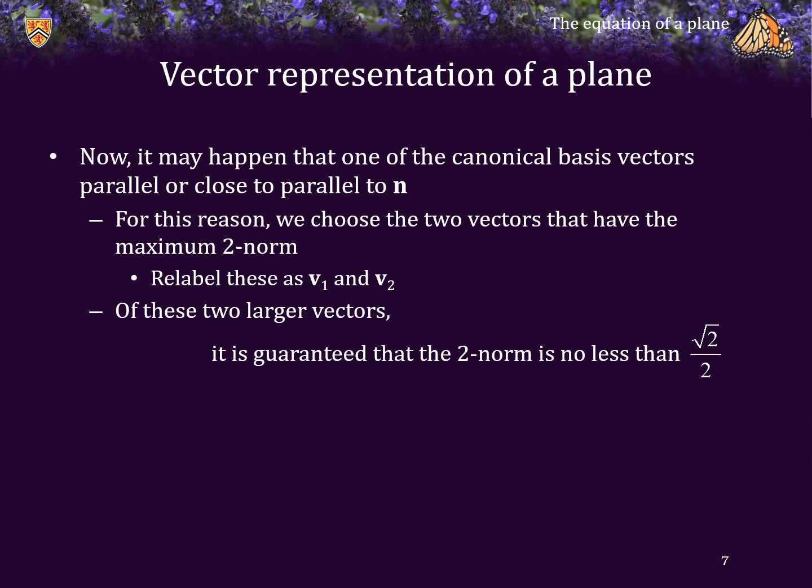Now, there's something really nice about this. Because we are excluding the one that is guaranteed, or the smallest, then it is guaranteed that the 2-norm of both V1 and V2, after relabeling, the 2-norm can be no less than root 2 over 2, or 0.707.